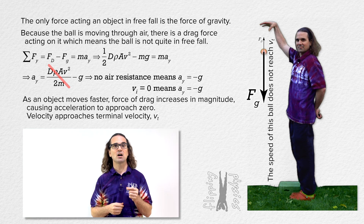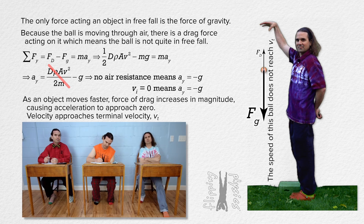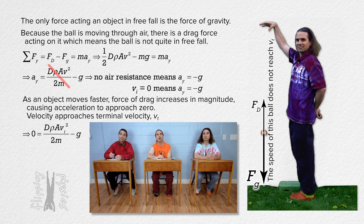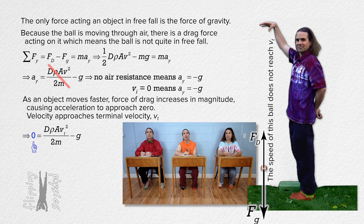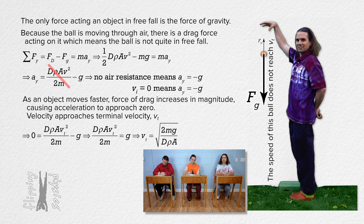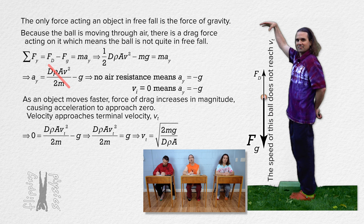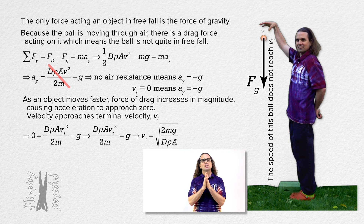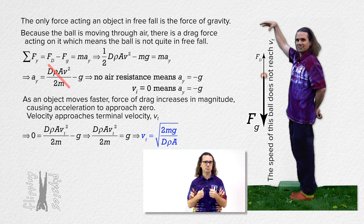We can solve for the terminal velocity by setting the acceleration in the y-direction equal to zero, adding the acceleration due to gravity to both sides, solving for terminal velocity squared, and taking the square root to get: terminal velocity equals the square root of two times mass times g, all divided by the quantity drag coefficient times density of the medium times cross-sectional area. Please do not memorize this equation — it is easy to derive, and you will be much better off understanding how to derive it.